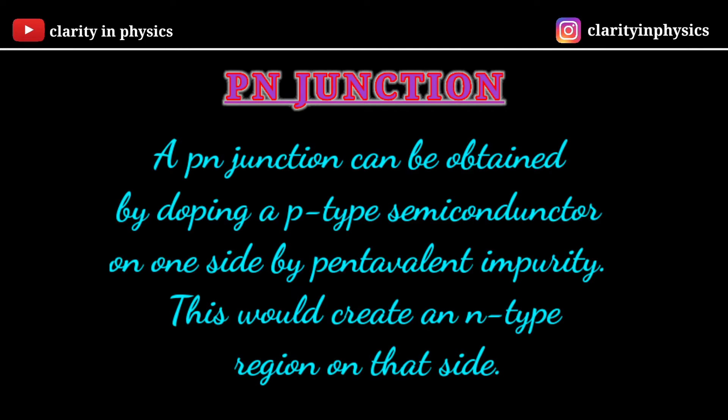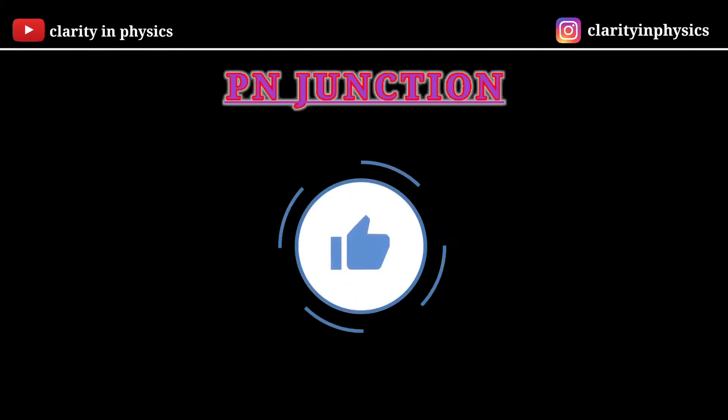P-N junction can be obtained by doping of a P-type semiconductor on one side by pentavalent impurity. This would create an N-type region on that side. It is important to note that we will not obtain P-N junction by joining two separate pieces, one P-type and another N-type.